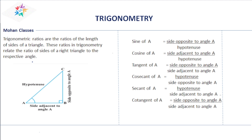In triangle ABC, with respect to angle A, we are going to represent the sine, cos, tan, cosecant, secant, and cot of angle A. AB is the side adjacent to angle A, BC is the side opposite to angle A, and AC is the hypotenuse.